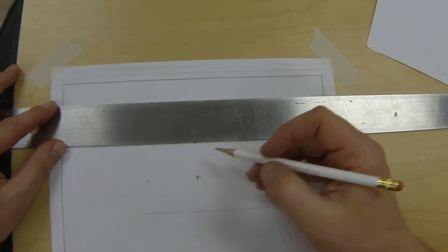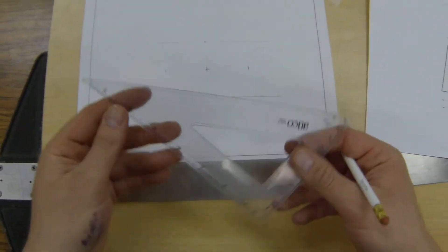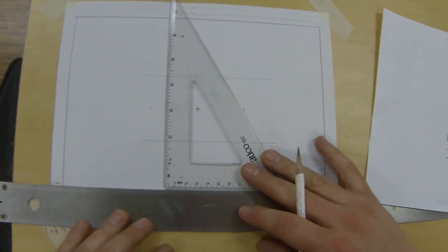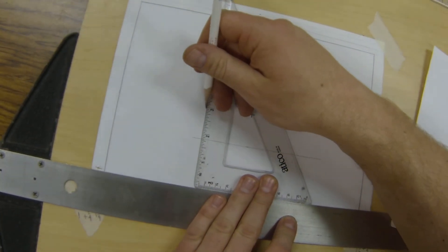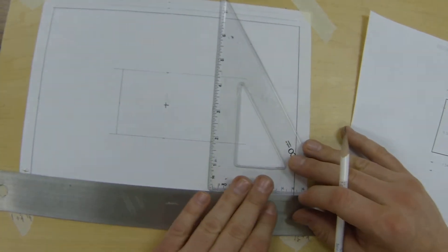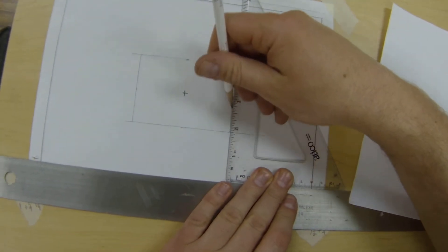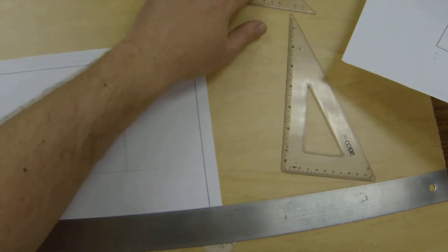Get my verticals next. I'm going to take my triangle - I'm choosing to use a 30-60 for this. Lay that out on there.